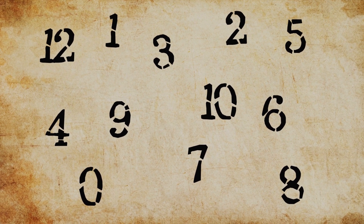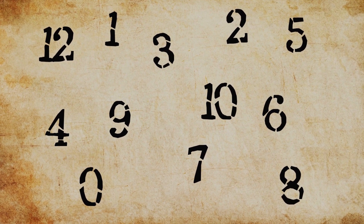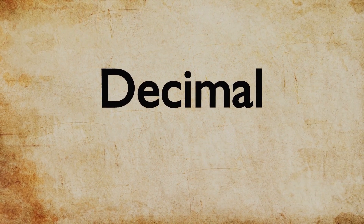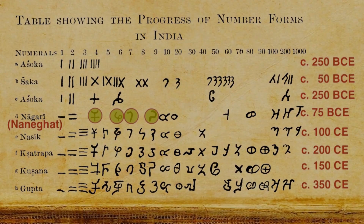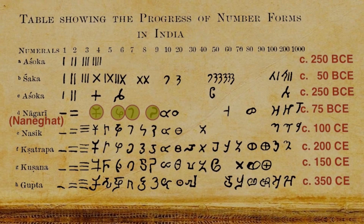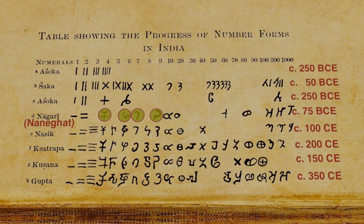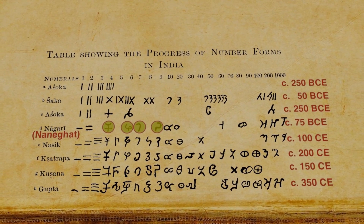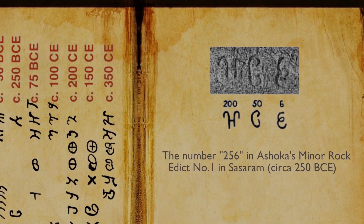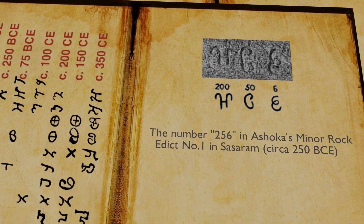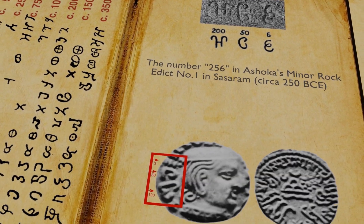Today the most commonly used system of numerals is decimal. Indian mathematicians are credited with developing these integer versions from the Hindu-Arabic number system. But Brahmi numerals are the ancestor of the Hindu-Arabic system.